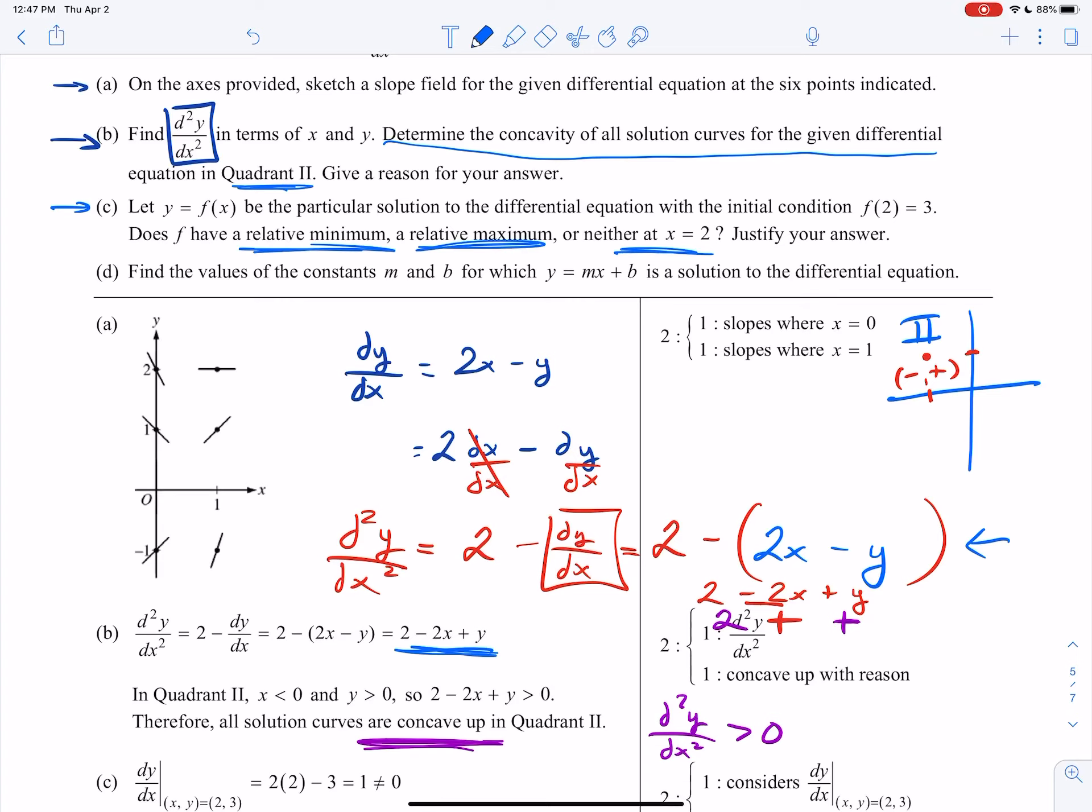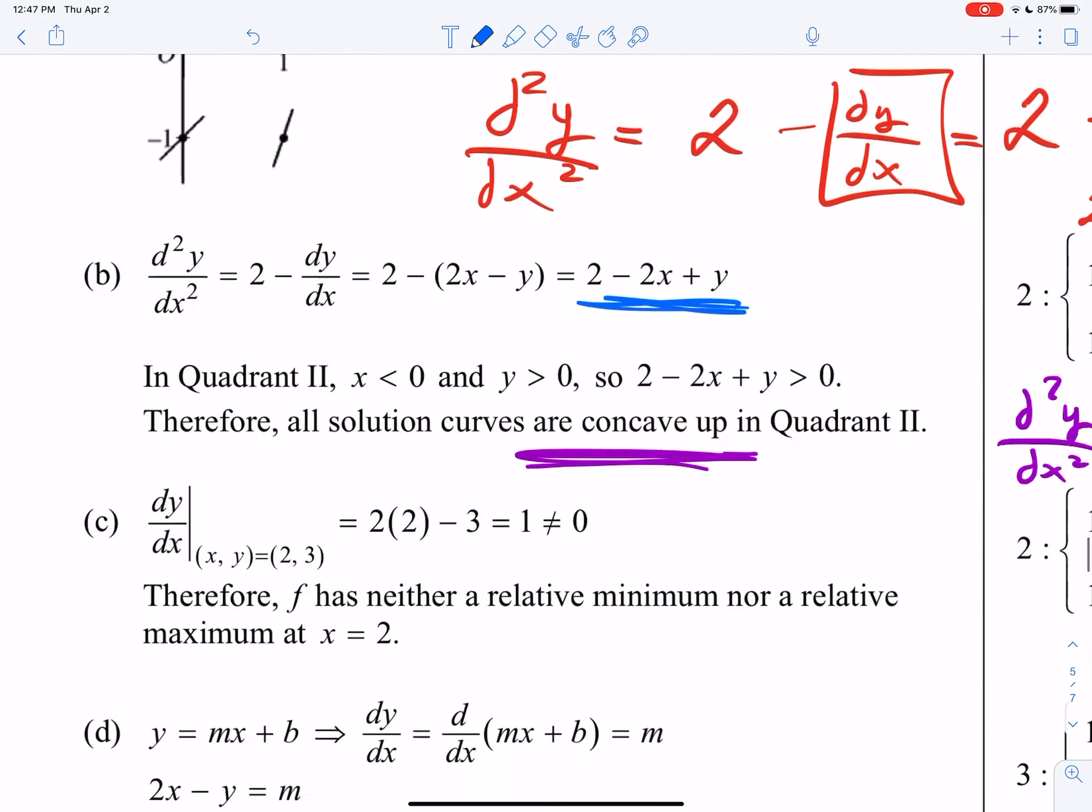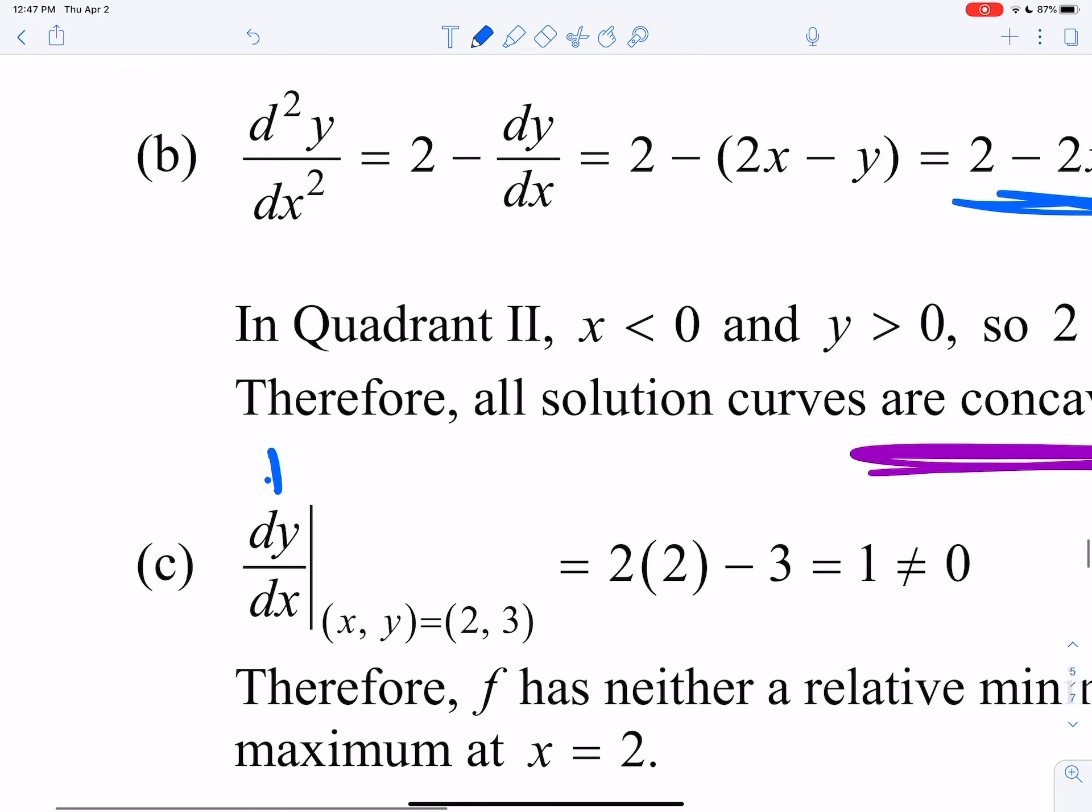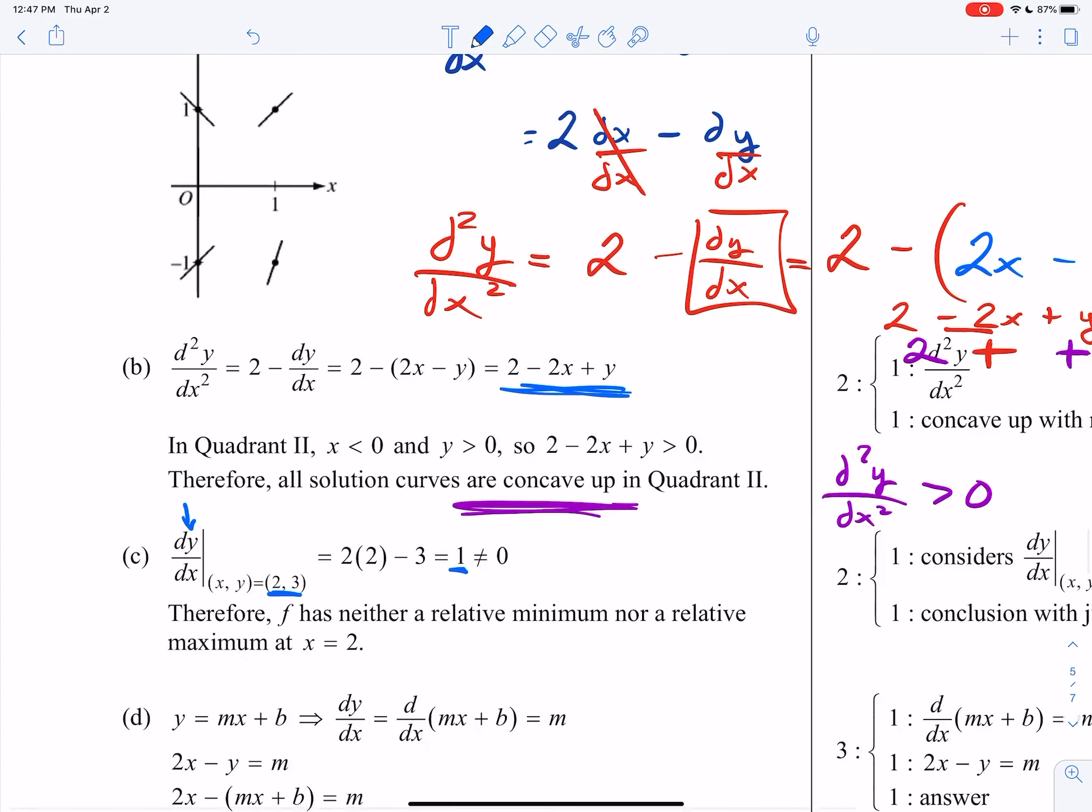You first want to see what happens with the slope at this point. So you check the slope, the first derivative, at (2, 3). So it actually comes out to 1. So because it comes out to 1, it's not a critical number. And if it's not a critical number, there's no way that it could be a local min or max. So right there, you're done. Therefore, it's neither.